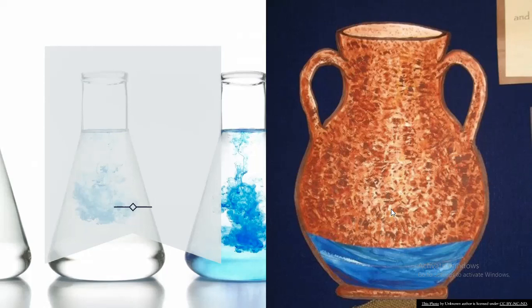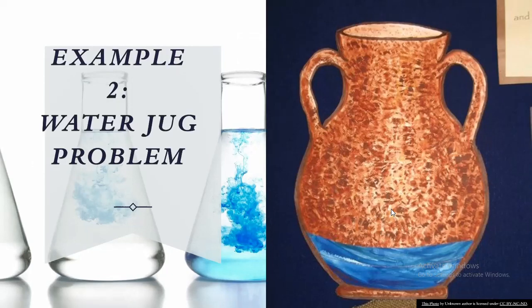So now take another example of a water jug problem. It is also a classic puzzle in artificial intelligence that involves finding a way to measure a specific amount of water using two jugs of different capacities. Let us take a detailed look at the problem and how it can be solved.